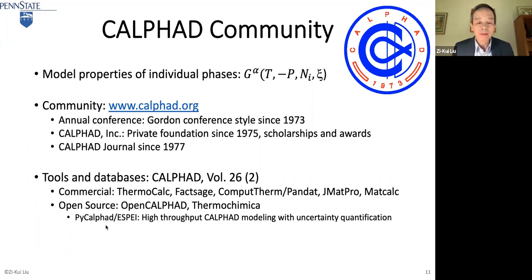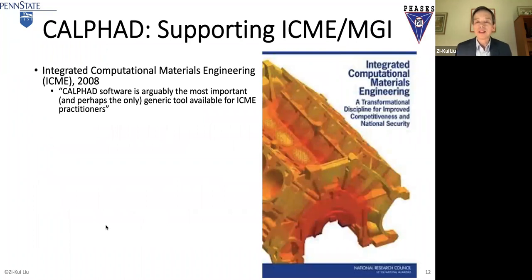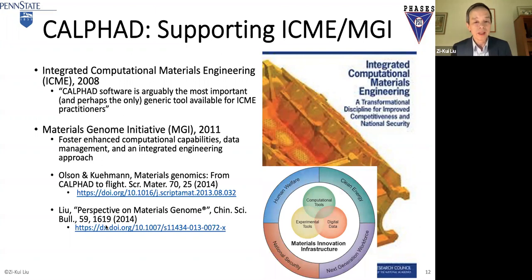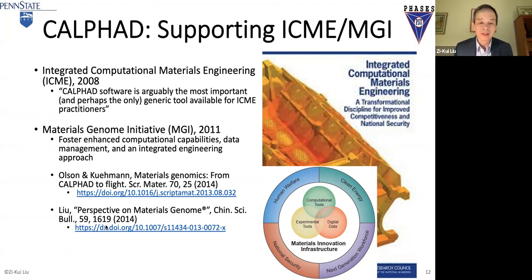JC and I now have more collaboration because he is developing high-throughput experiments and we are developing high-throughput CALPHAD modeling. CALPHAD supports the ICME and MGI activities. For example, in the ICME report in 2008, it stated that CALPHAD software is arguably the most important and perhaps the only generic tool available for ICME practitioners. Also for the Materials Genome Initiative in 2011.